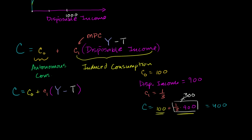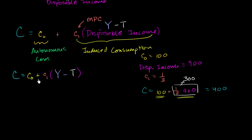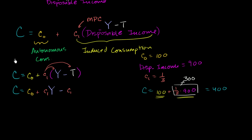To show this is still a line when plotted against aggregate income, we can distribute C1 (the marginal propensity to consume): aggregate consumption equals autonomous consumption, plus C1 times aggregate income, minus C1 times taxes. Since we're treating everything except aggregate income as constant, this is just a linear function of aggregate income.